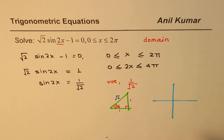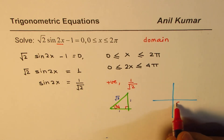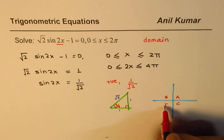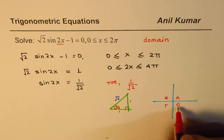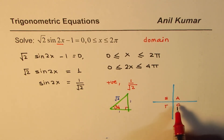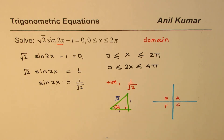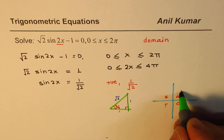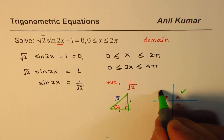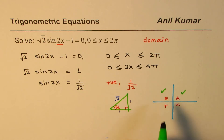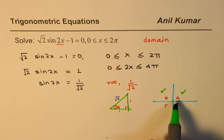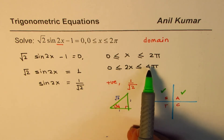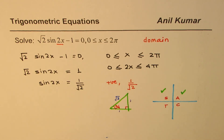We can use the CAST rule — all silver teacup, or all students take calculus — whichever you prefer. From this coordinate system it is clear that sine is positive in quadrant 1 and in quadrant 2. That means within 0 to 2π we are looking for two solutions, and within 0 to 4π we are looking for four solutions.